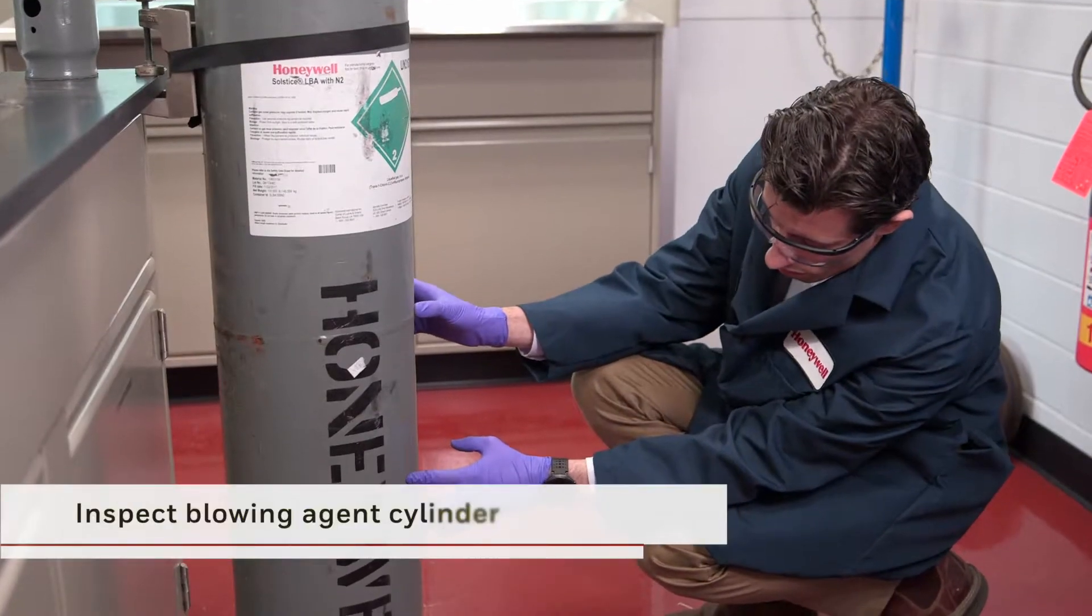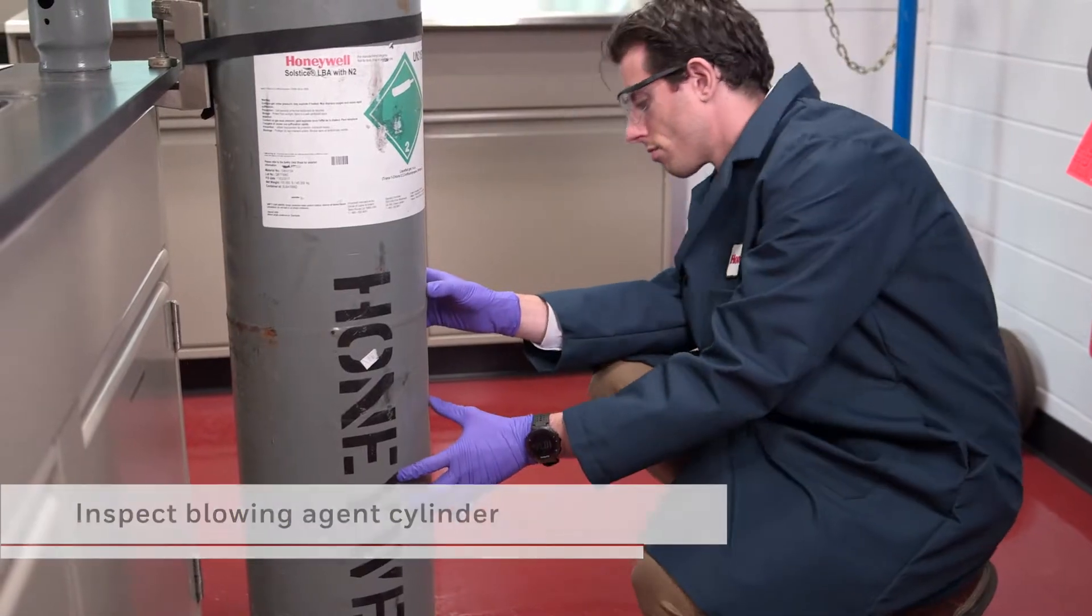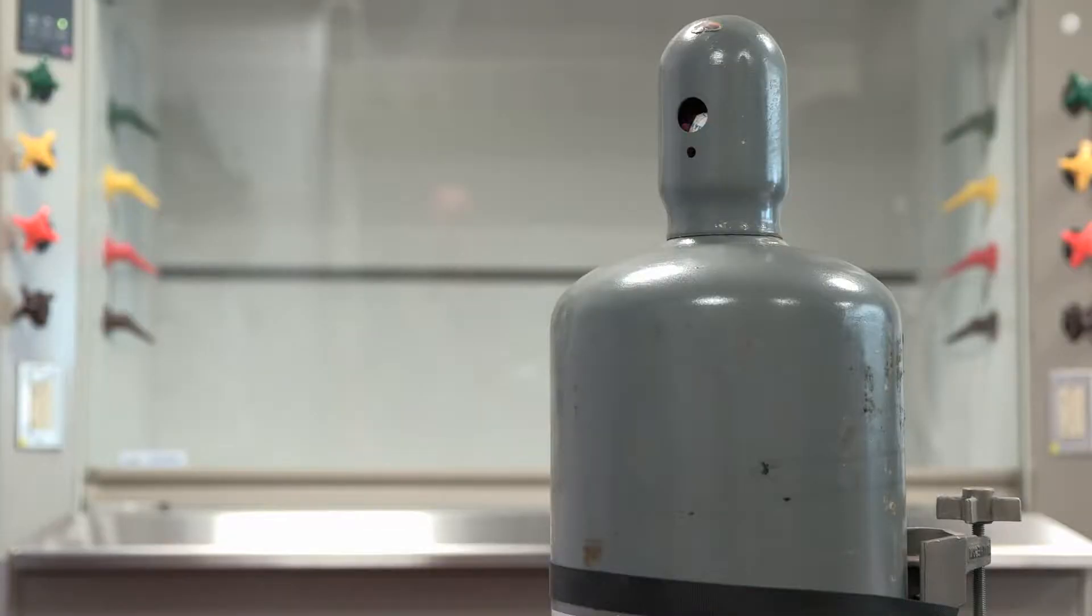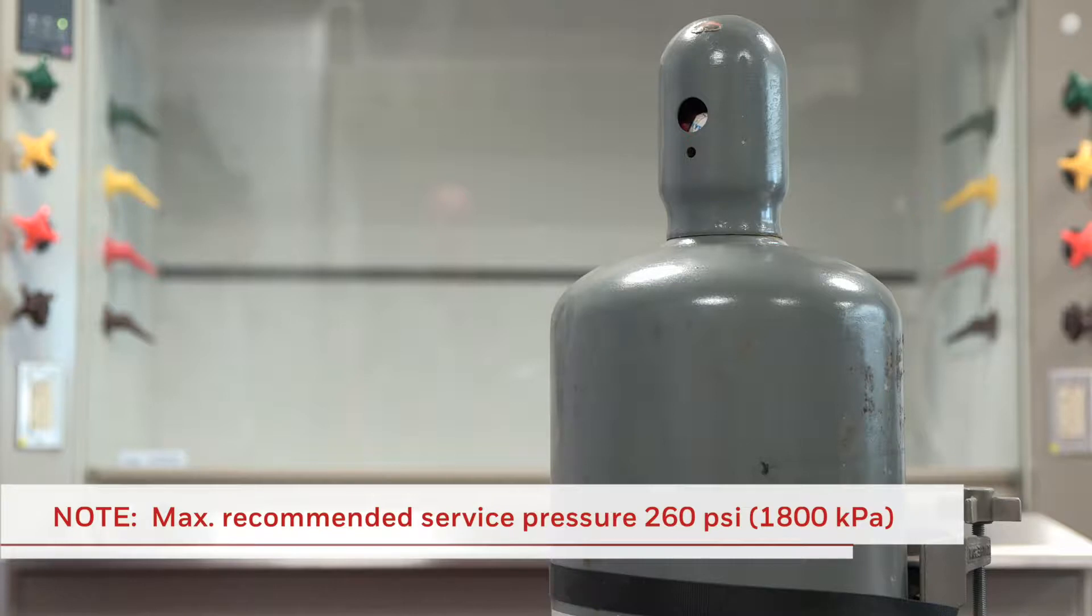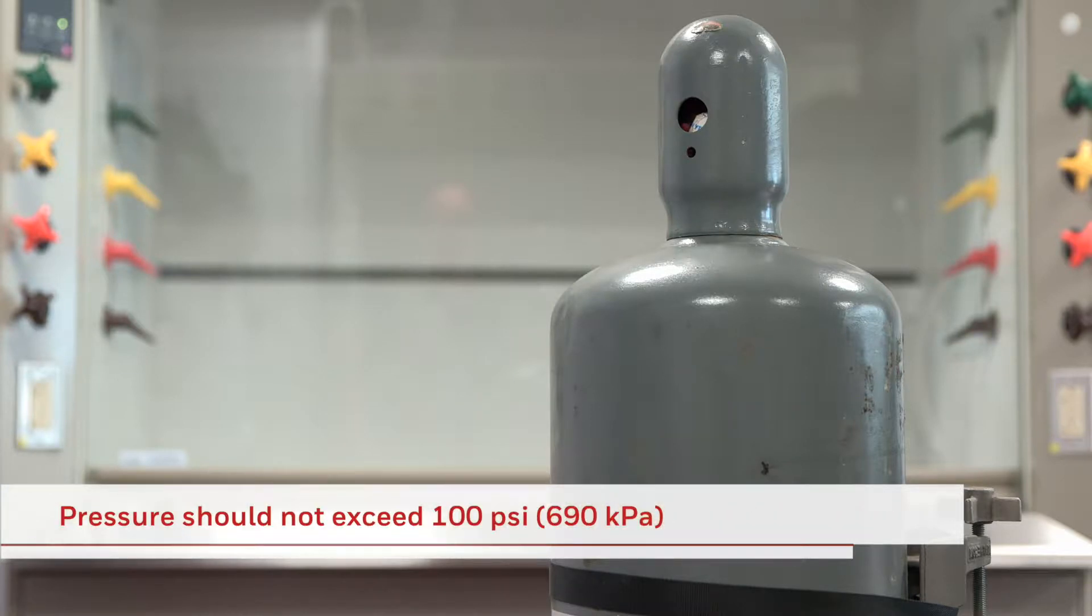First, inspect the blowing agent cylinder. These 100-pound cylinders are designed to be used vertically. The maximum recommended service pressure is 260 psi, or 1800 kPa, and there's no practical need for cylinder pressure to exceed 100 psi, or 690 kPa.